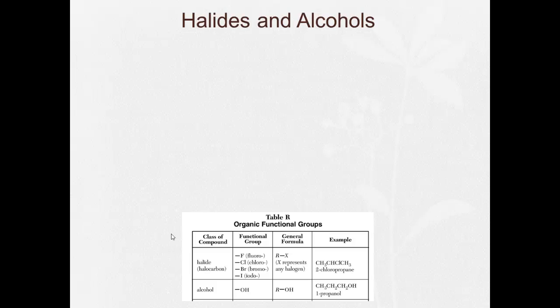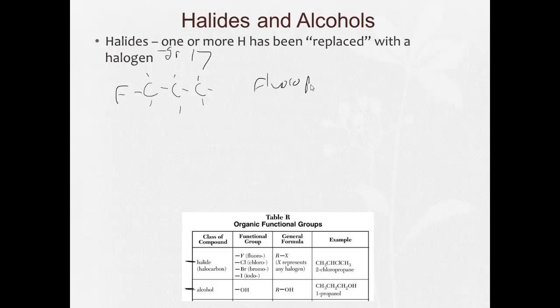The first two we're going to look at are halides and alcohols. Halides have one or more of the hydrogens replaced with a halogen. Remember, halogens are group 17: fluorine, chlorine, bromine, iodine. So let's say we have propane and we replace one of these hydrogens with an F. This would be fluoropropane.